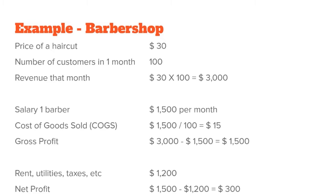In this case, $3,000 revenue minus the barber's salary of $1,500 equals $1,500 left that we can use for other business costs such as rent, utilities, and taxes. We call this figure the gross profit. The gross profit is your revenue minus your cost of goods sold — how much you get from customers minus the cost of fulfilling that product or service.